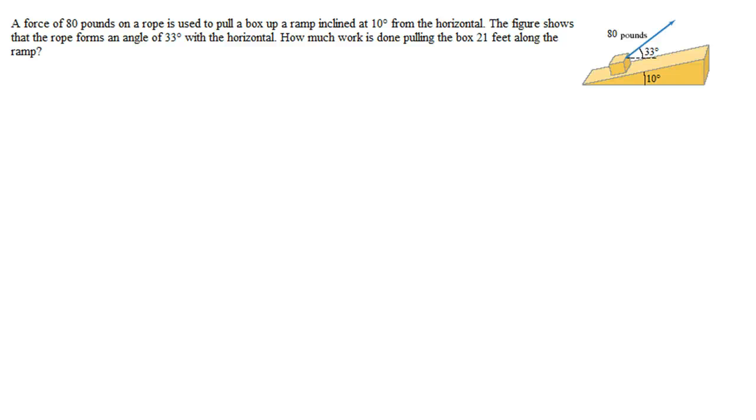Okay, we have a force of 80 pounds on a rope, and it's used to pull a box up a ramp at an incline of 10 degrees. And the figure shows this rope forms a 33 degree angle, but it's with the horizontal. That's the key.